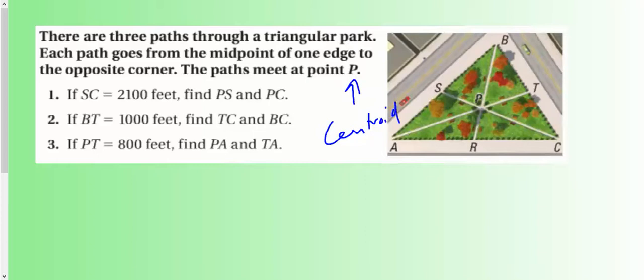SC is 2,100. And they want us to find PS and PC. So they want each of these parts. So we're going to do 1 third and 2 thirds. So 1 third of 2,100 is going to be 700. And then 2 thirds of 2,100 is 1,400. So that's that one there.